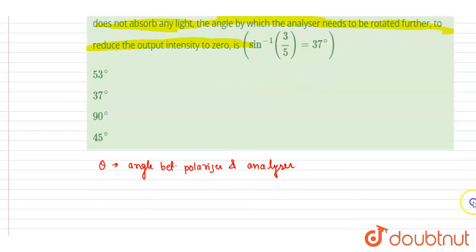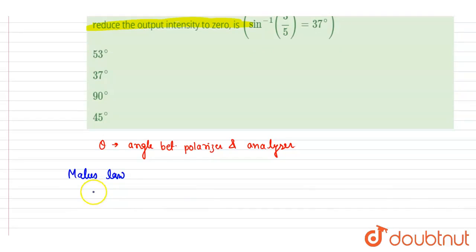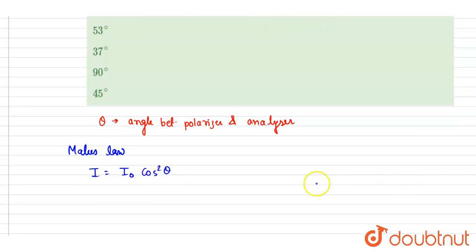So if you see here, from Malus's law we know that the intensity of light coming out of the analyzer will be the intensity of light that was passing through times cos²θ, where theta is the angle between polarizer and analyzer.